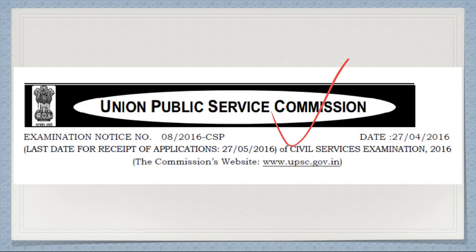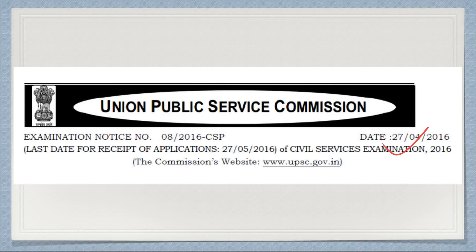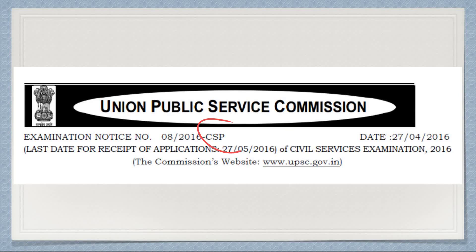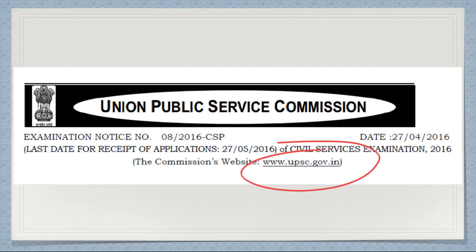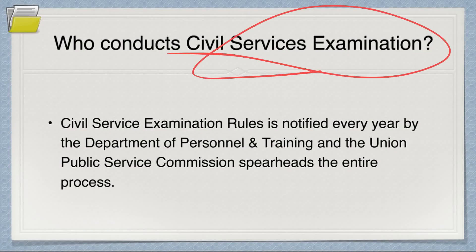The Union Public Service Commission notification will look like this when it comes next year. It came on 27th April 2016, and the last date of receipt was 27th May 2016 — so you have exactly one month to fill the form. CSP means Civil Services Prelims, and it was scheduled to happen in August 2016. You can go to the commission's website for more information.